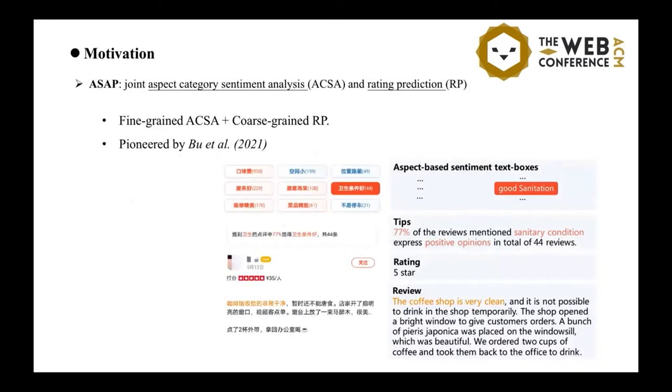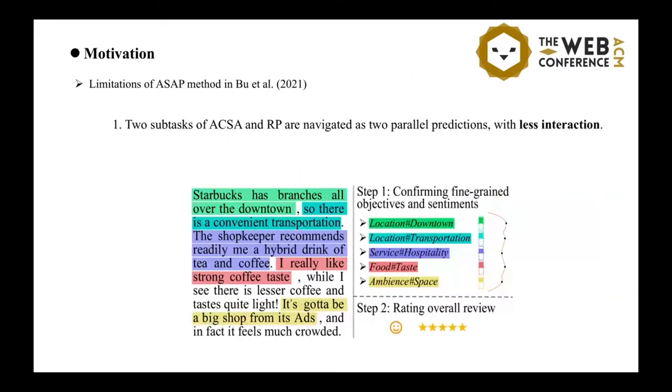In the task, two types of granularity of sentiment analysis is combined in the overall viewpoints. But there have been three major limitations of the ASAP method. The first one is that the two subtasks are navigated as two parallel predictions with few interactions.